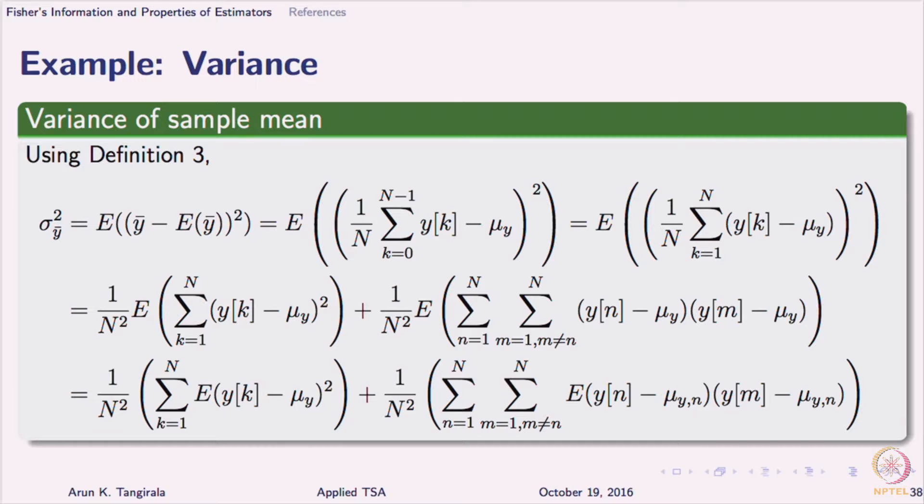No, no, expectation of (yk - μ) to the whole square. What is it? It is the variance of y, right? And you have n such variances. So, the entire summation divided by n² works out to be σ²/n.